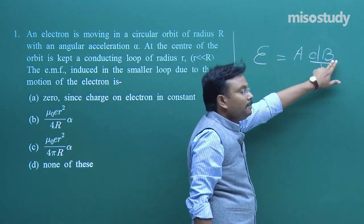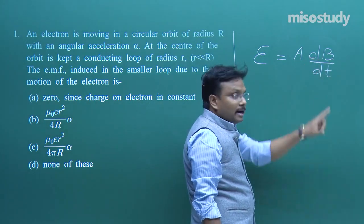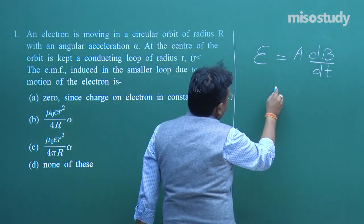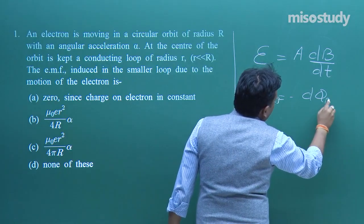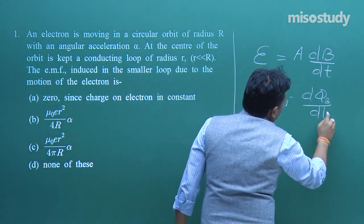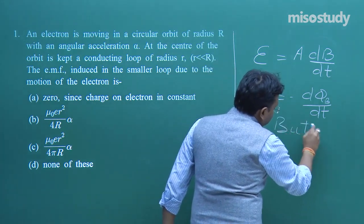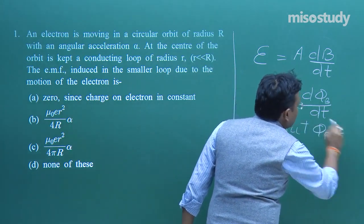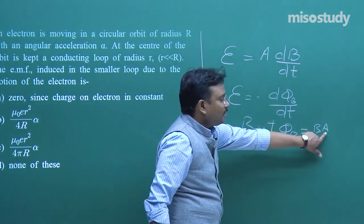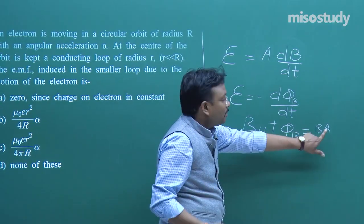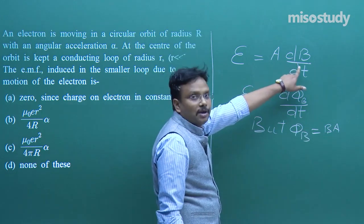Why am I writing dB/dt and not anything else? Because φ_B = B·A. Area A is constant; B is the value of the magnetic field which is varying. That is why I am using this relation.